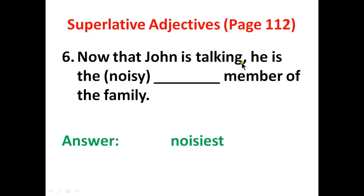Number six: Now that John is talking, he is the noisiest member of the family. 'Noisy' is an adjective; 'noisier' and 'noisiest' are the comparative and superlative adjectives respectively. Any adjective ending with 'y' — you will replace the 'y' with '-ier' or '-iest.' So here you make the superlative adjective: noisiest.